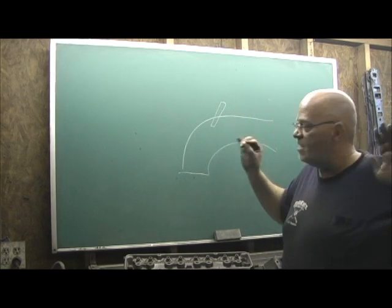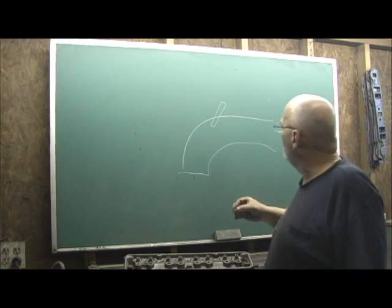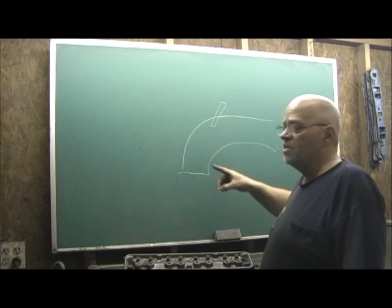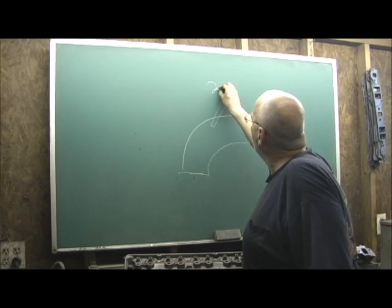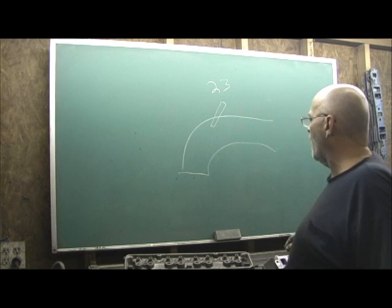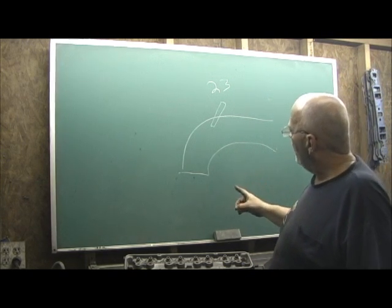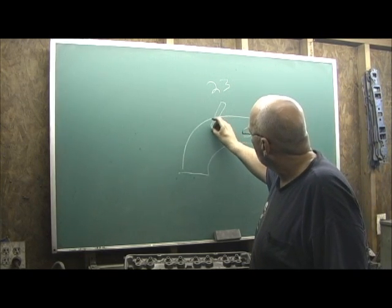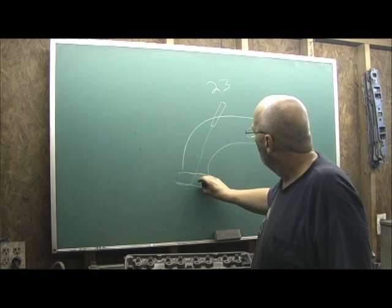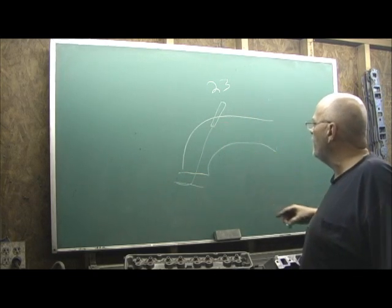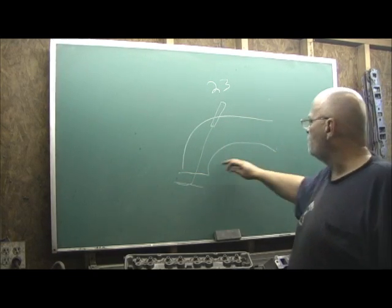My drawings ain't the best. I'm almost out of chalk. Bear with me. Let's say that this is the 23-degree small block Chevrolet head. That means that the valve, this little turkey right here, is inclined at 23 degrees parallel to the surface of the head.